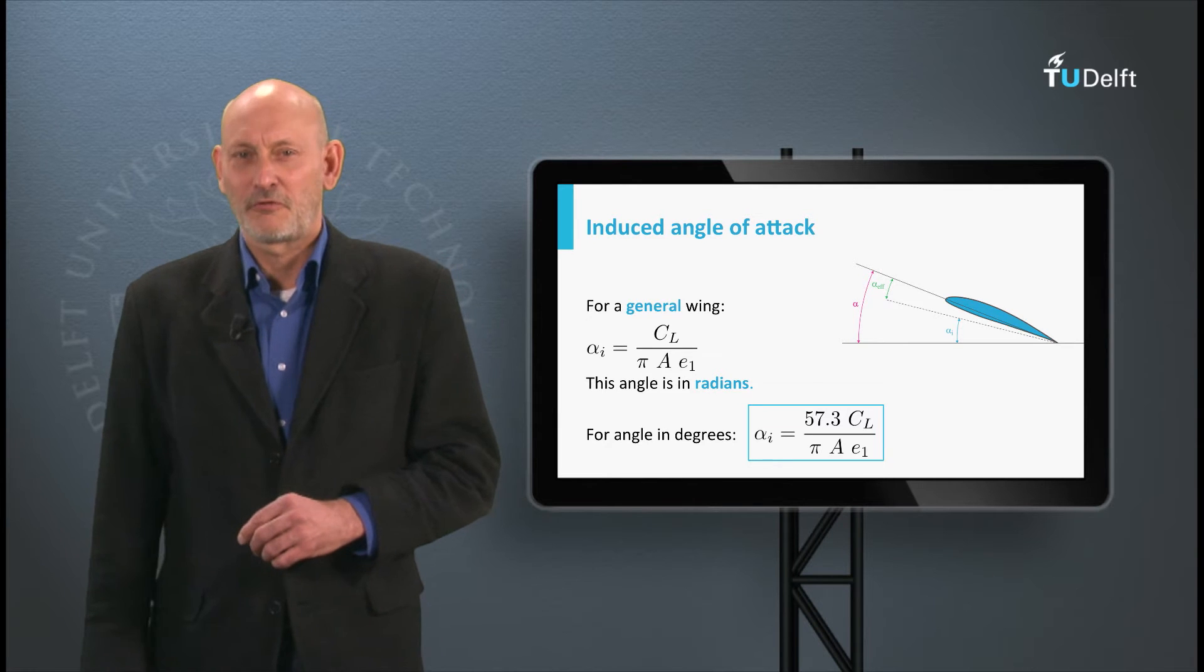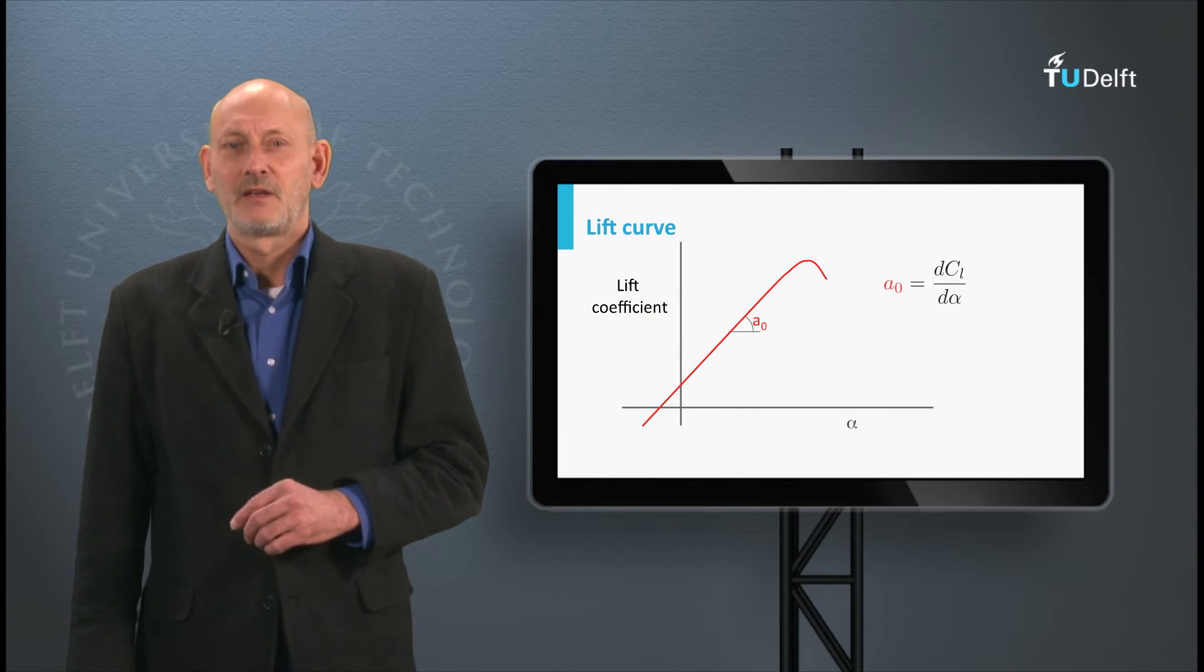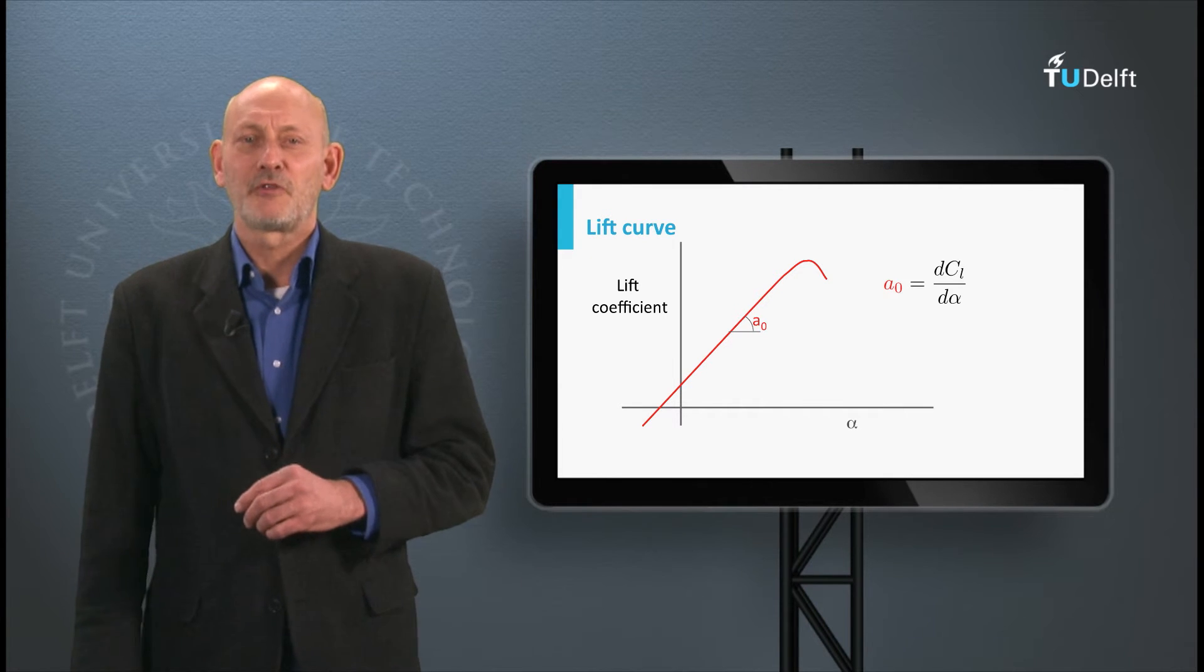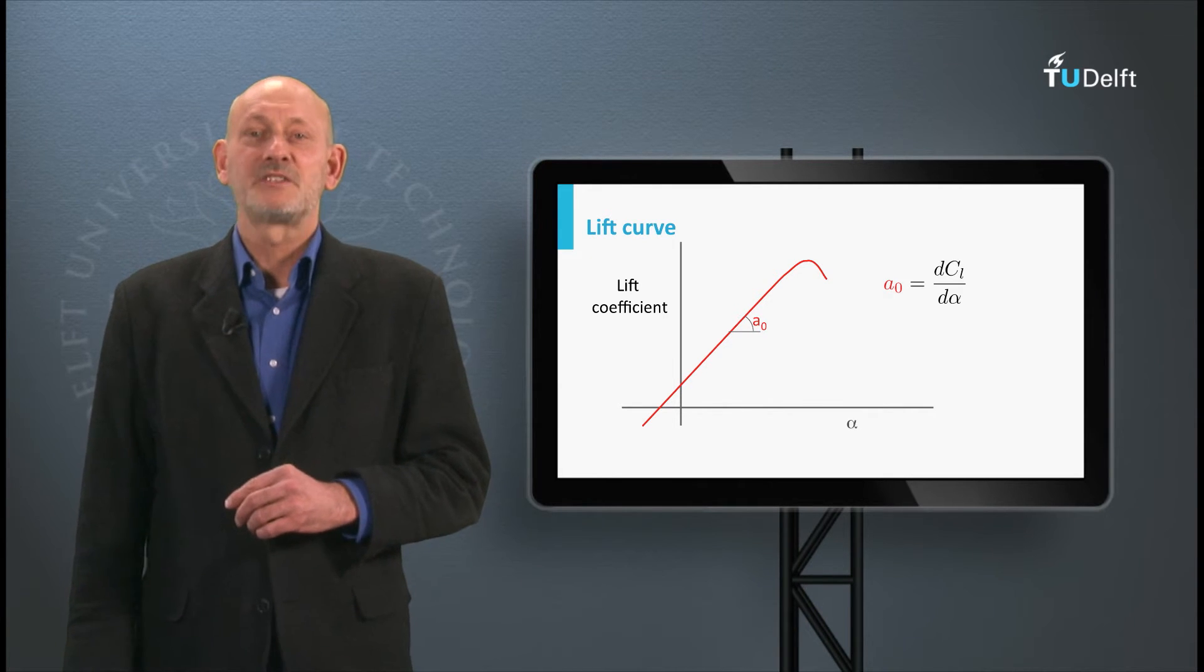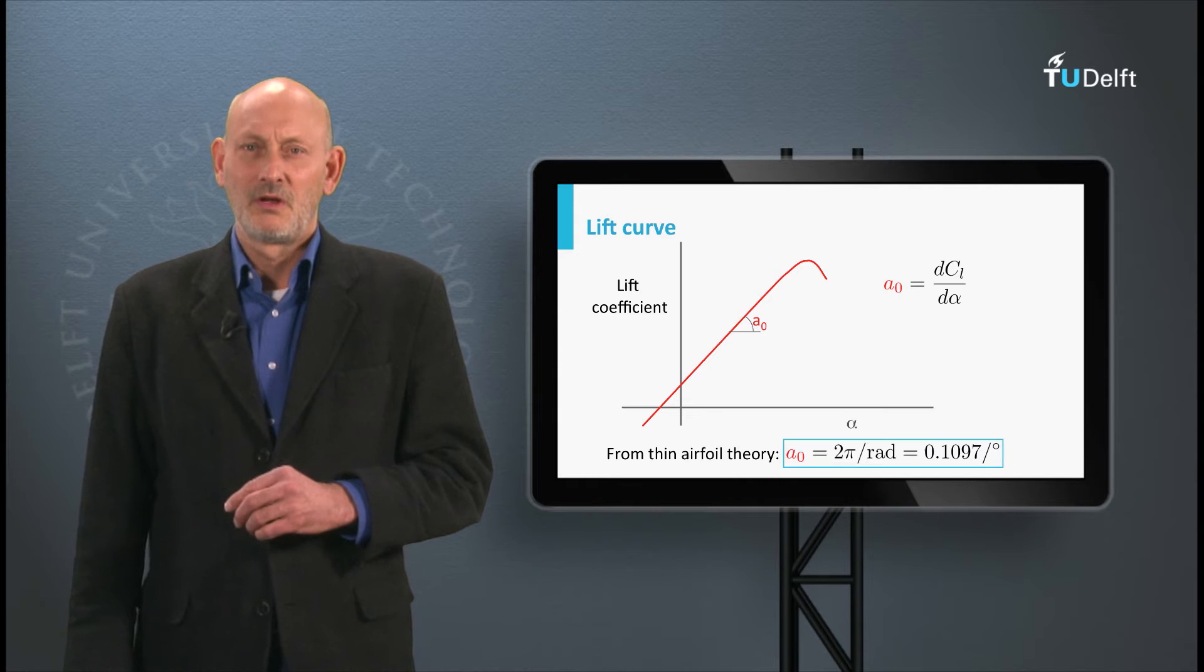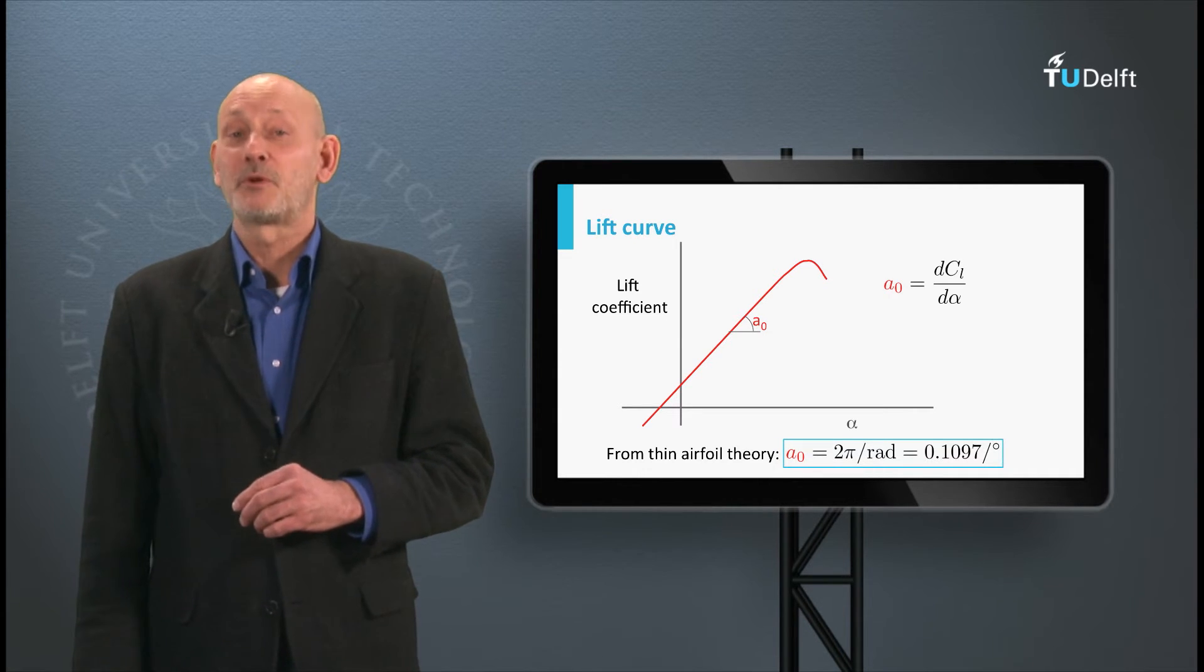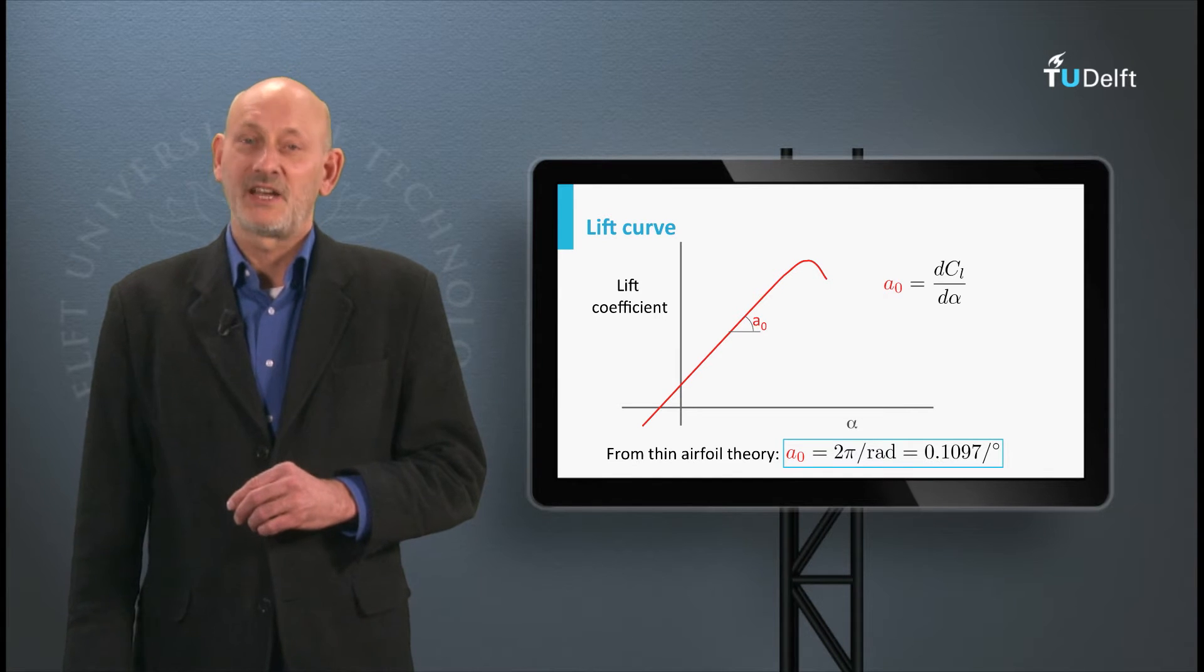Let's look at the lift curve for the profile in the wing and for the wing as a whole. Suppose the lift gradient for the profile dCL/dalpha is equal to a0. From thin airfoil theory we find that a0 is 2 pi per radian or 0.1097 per degree.